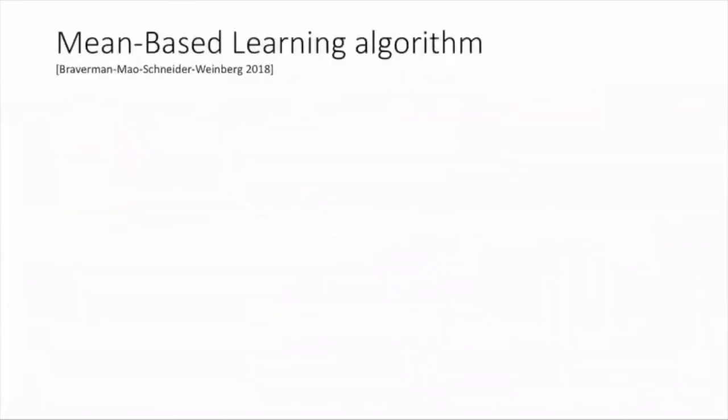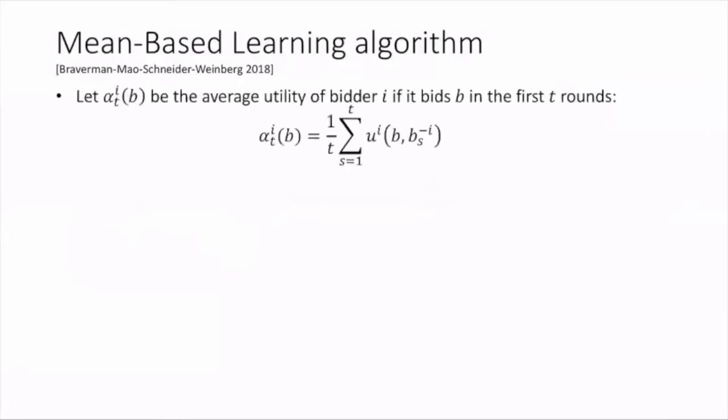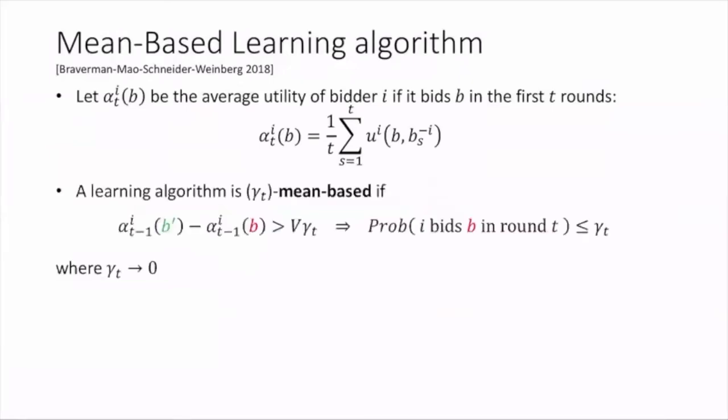As I mentioned, we assume the learning algorithm has a mean-based property, which was proposed by Brewerman et al. in 2018. We let alpha t i b be the average utility of bidder i if it bids b in the first t rounds. A learning algorithm is gamma t mean-based if a sufficiently large gap between two average utilities implies small probability that bidder i will bid b.